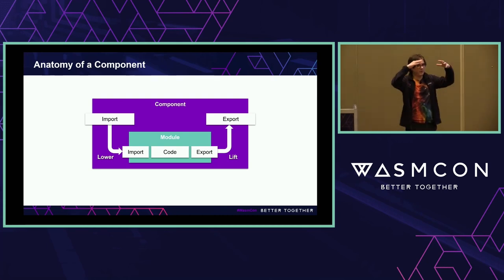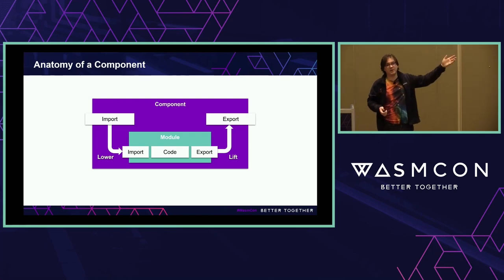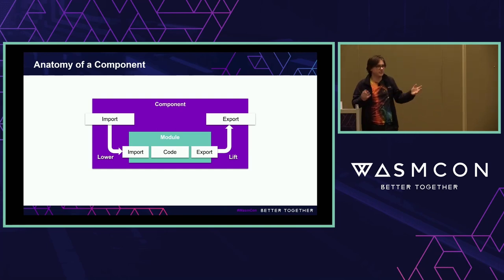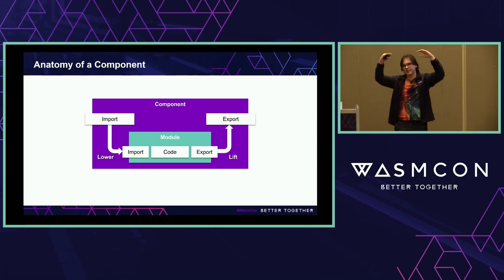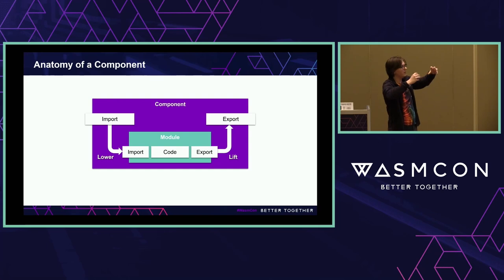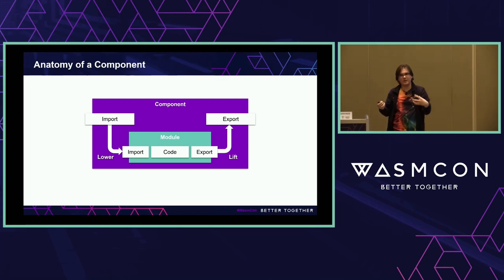That layering idea — that the component model is layered on top of modules — is also directly how it works; it's not just a metaphor. A component fundamentally contains a module if it's going to do any real computation, and your computation is still expressed in terms of normal instructions in a Core Module. What's different is that the component has its own level of import and export at the level of abstraction we were just talking about — with strings, records, and such.